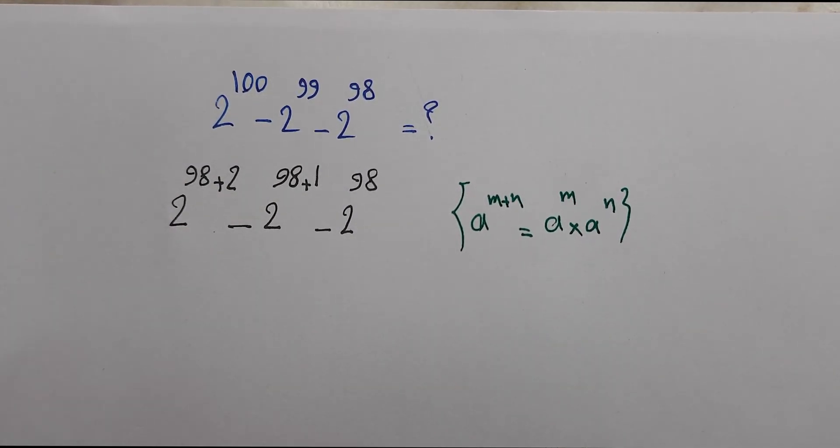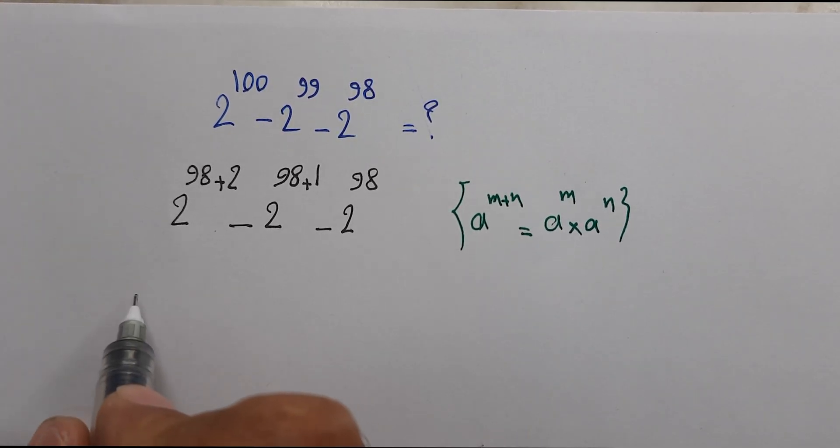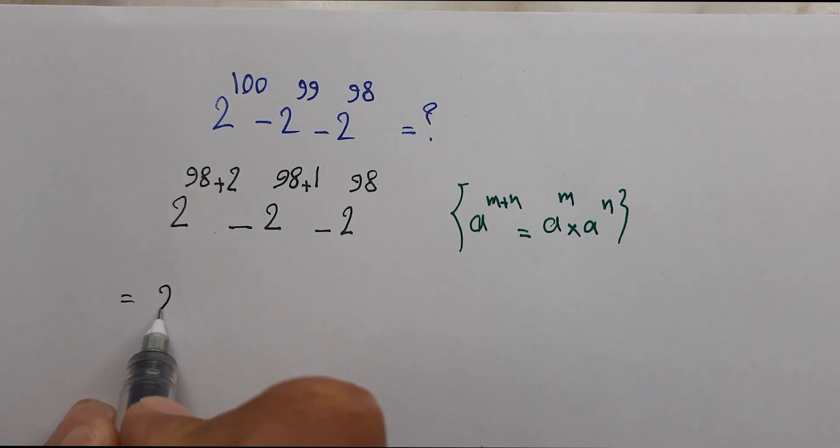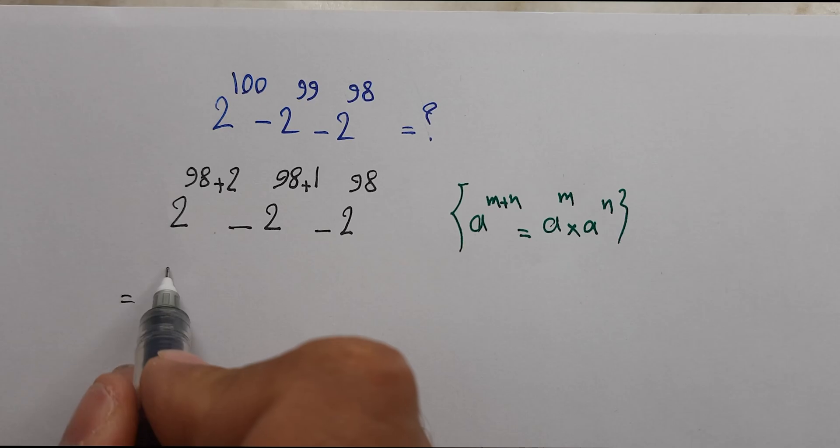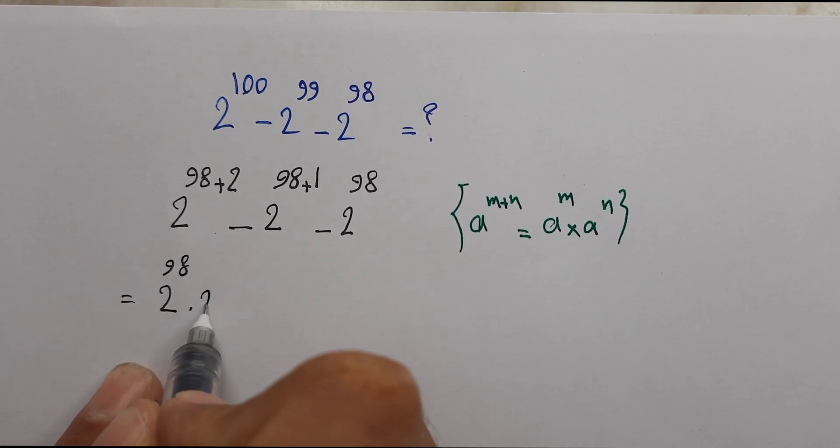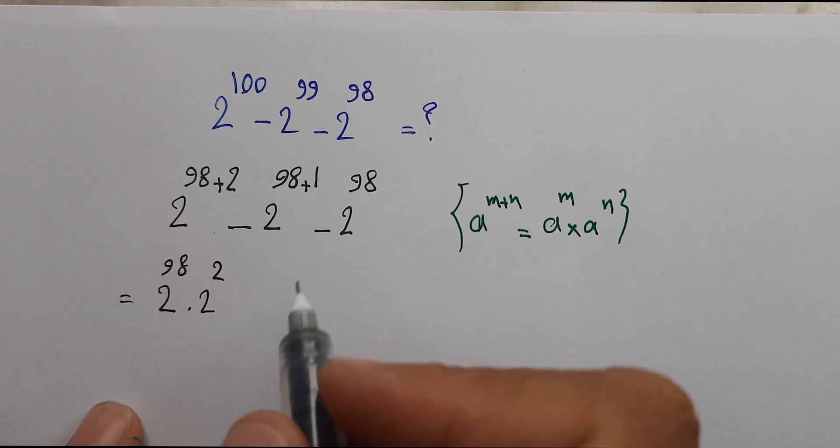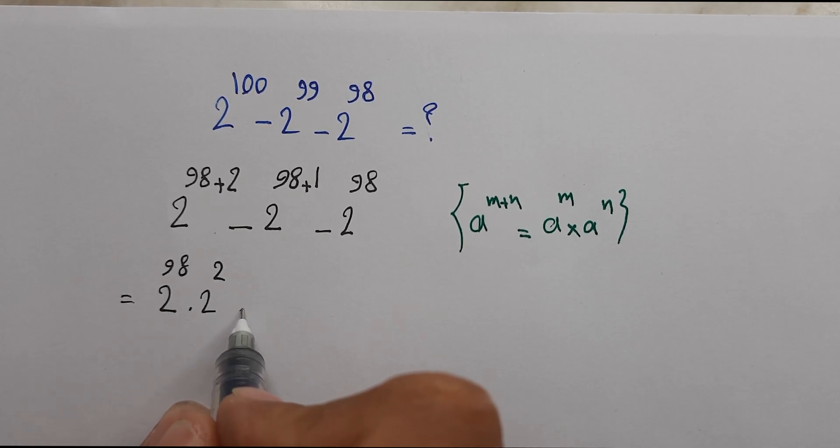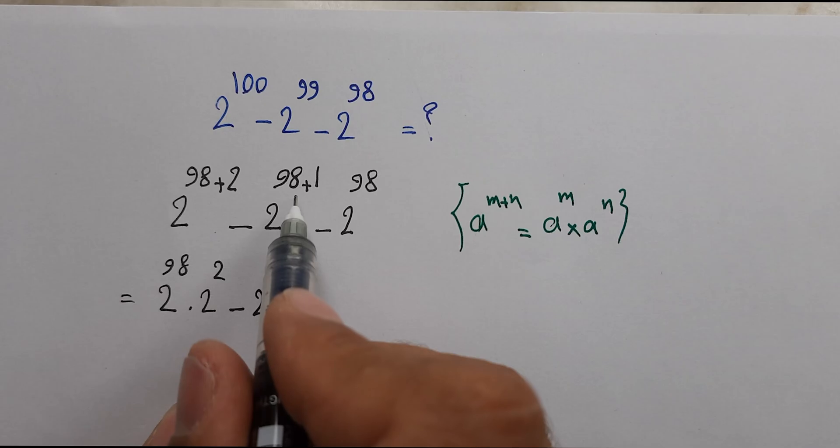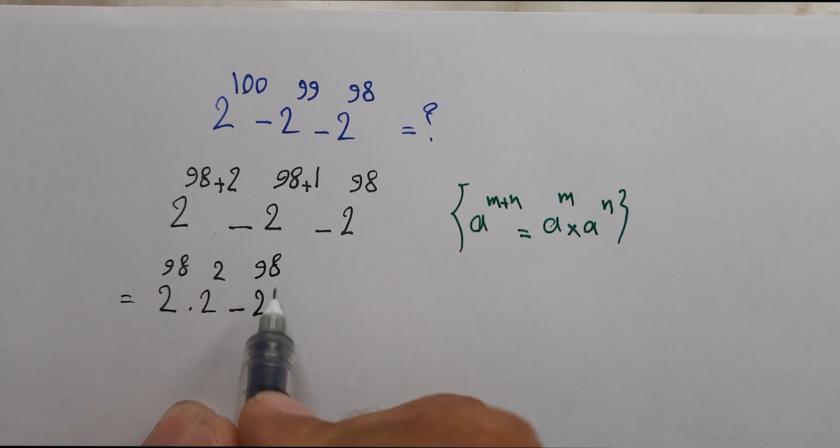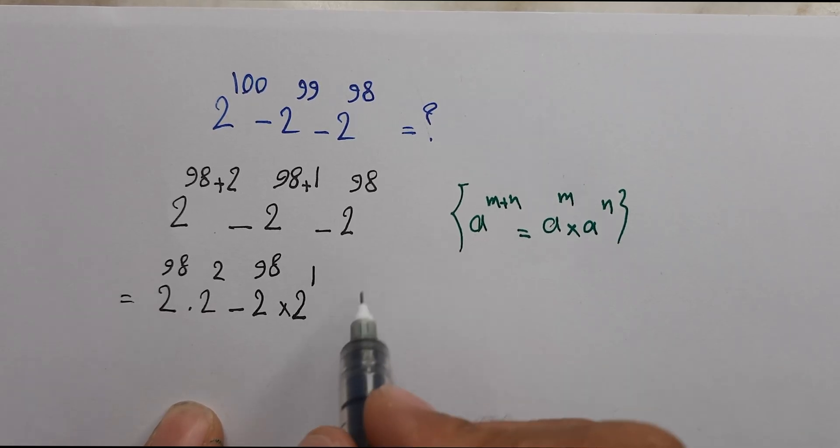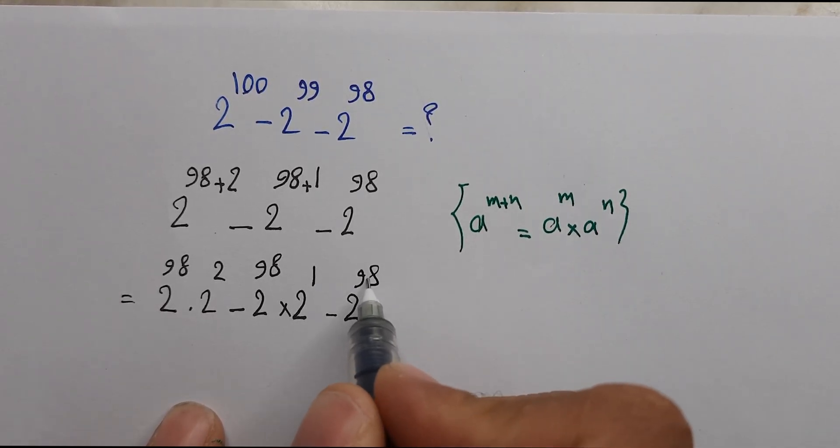So here we can write 2 power 98 times 2 power 2, and minus 2 power 98 times 2 power 1, and we have 2 power 98.